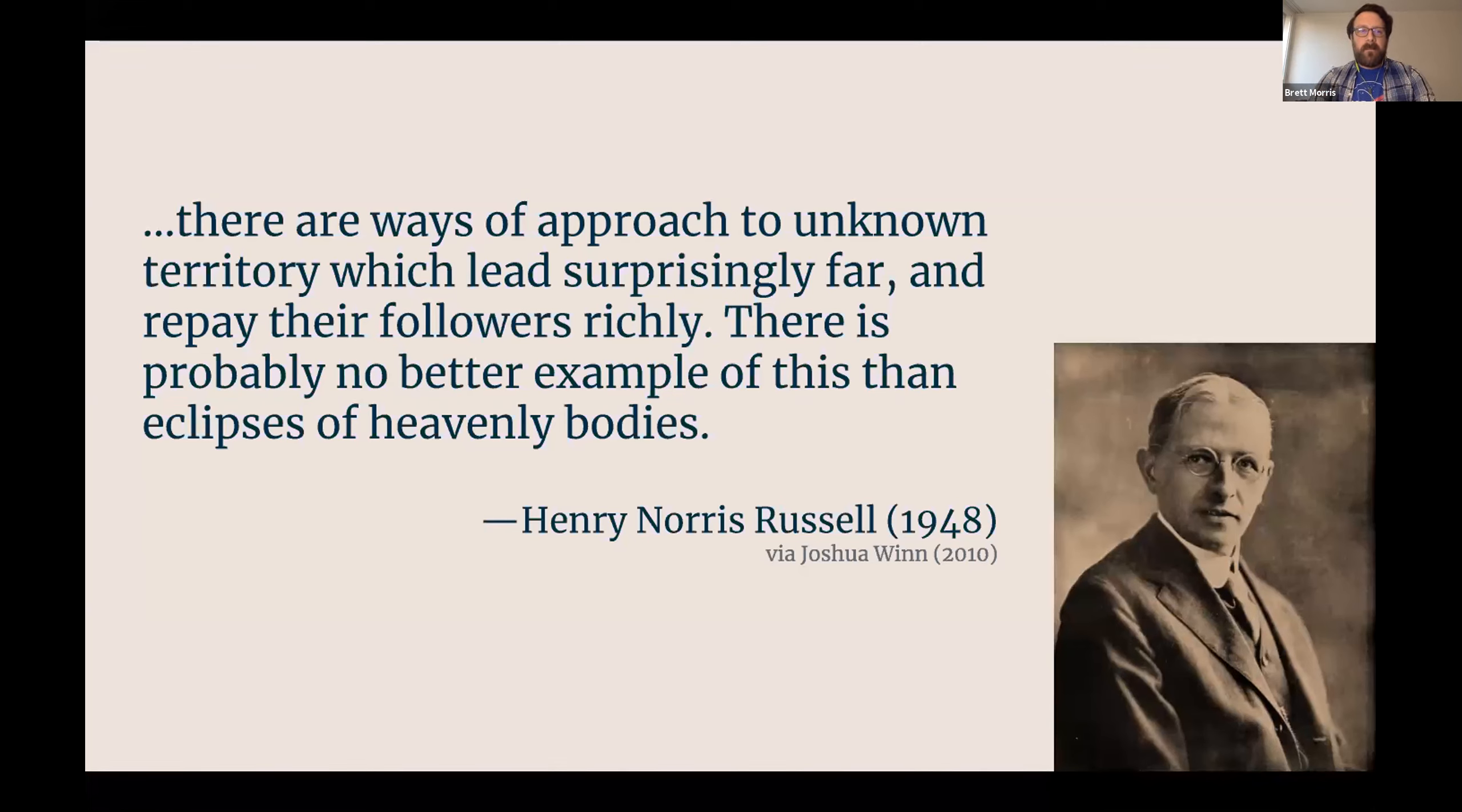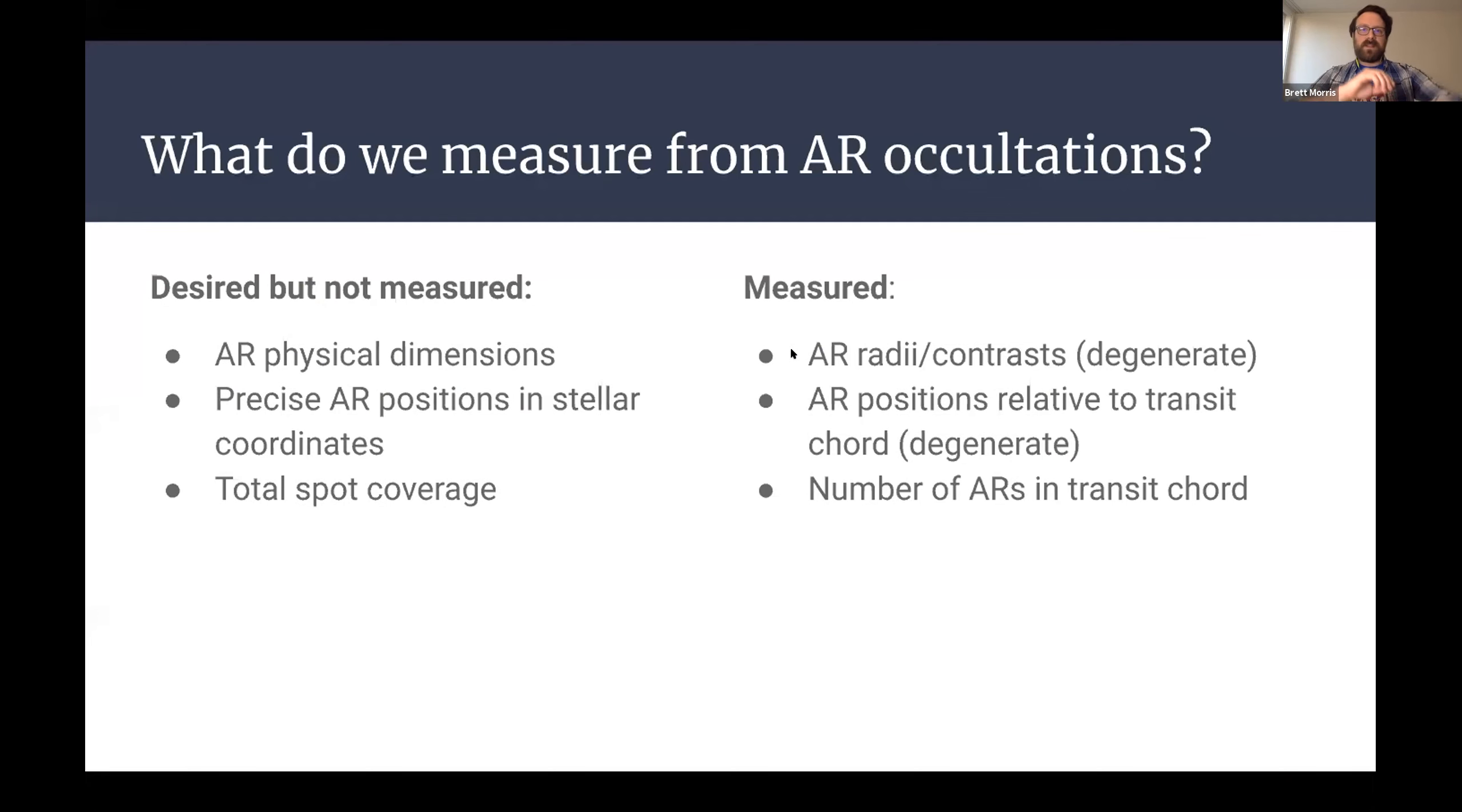So one of the great magics of astronomy is eclipses. And I really love in Josh Wynn's chapter in the exoplanets textbook, there's a little introduction where he quotes Henry Norris Russell who said, there are many ways of approach to unknown territory which leads surprisingly far and repay their followers richly. And there's probably no better example of this than eclipses of heavenly bodies. And that just resonates with me to my core. I love the idea that eclipses are the Rosetta stones that allow us to figure out from eclipsing binaries, we can figure out masses and radii of stars. From eclipses of active regions, we can figure out properties of those active regions. And I'm going to very briefly summarize some of those things and what we have found in some observations.